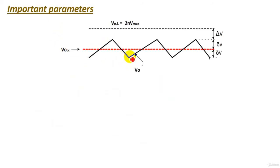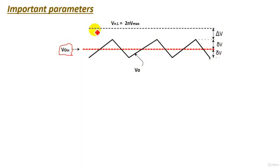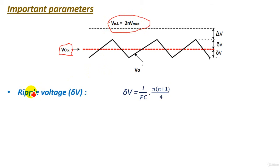Now let's look at the important parameters of the Cockcroft-Walton voltage multiplier circuit. We can simplify the output voltage waveform — this shows the average DC voltage, which is applied to the insulator under test. We also have the ripple voltage, the voltage drop, and the no-load voltage, which equals 2nV maximum — the maximum DC voltage obtainable from the circuit.